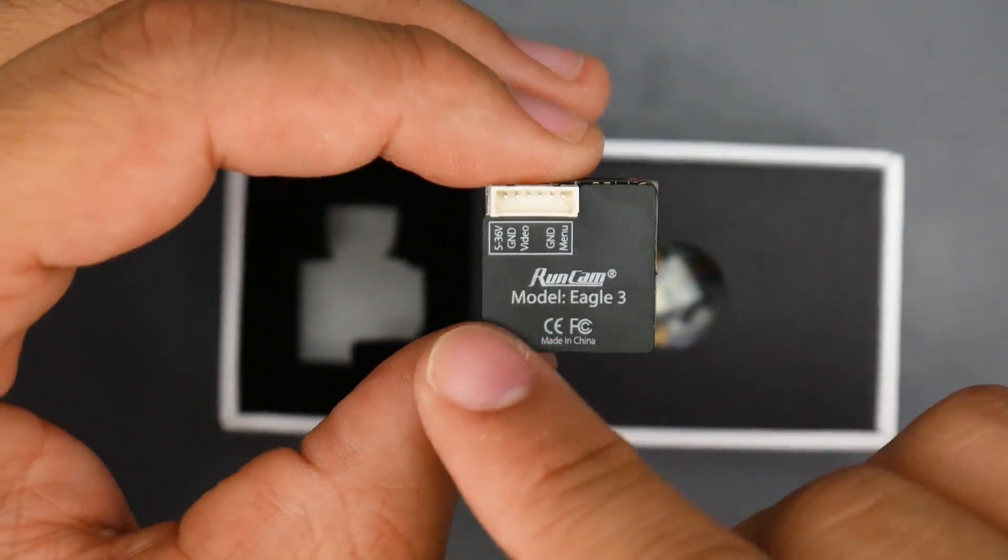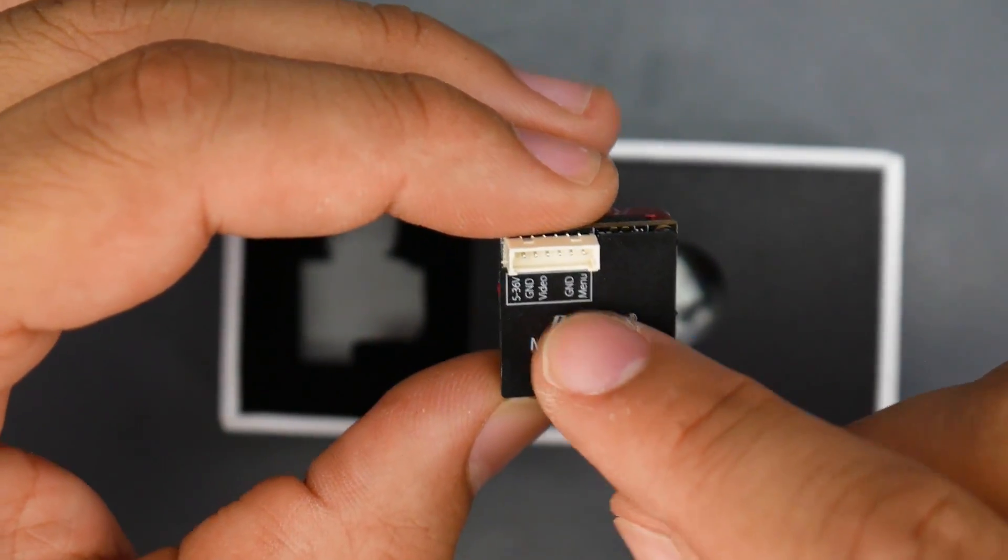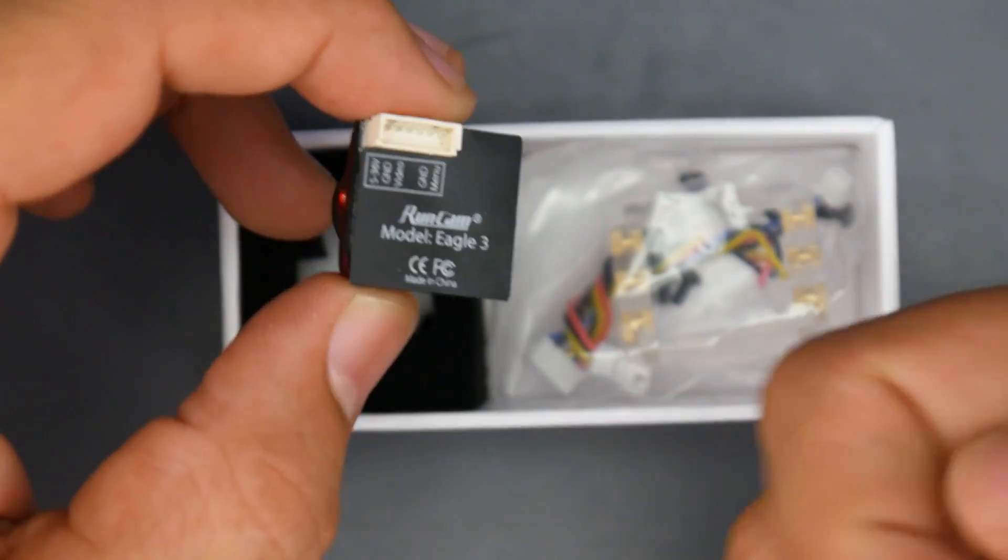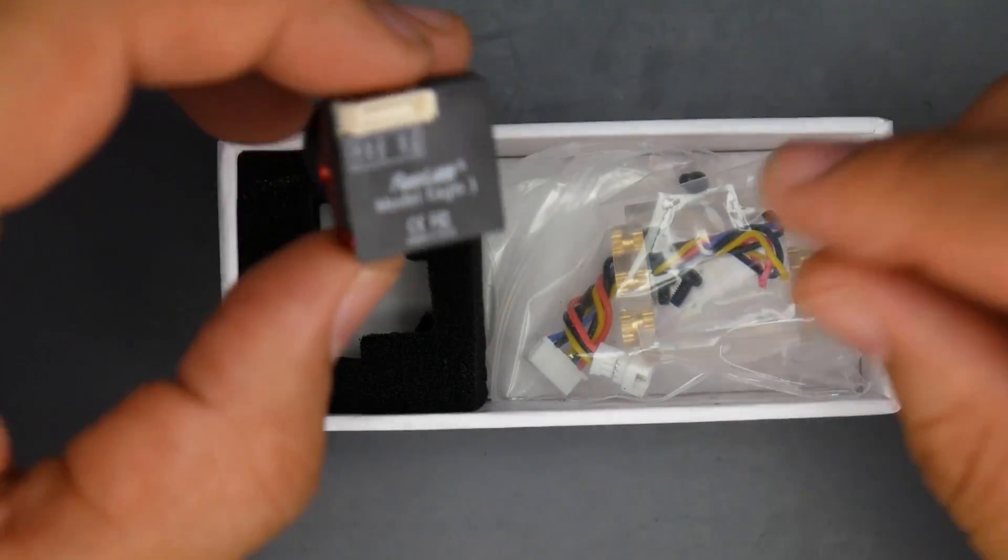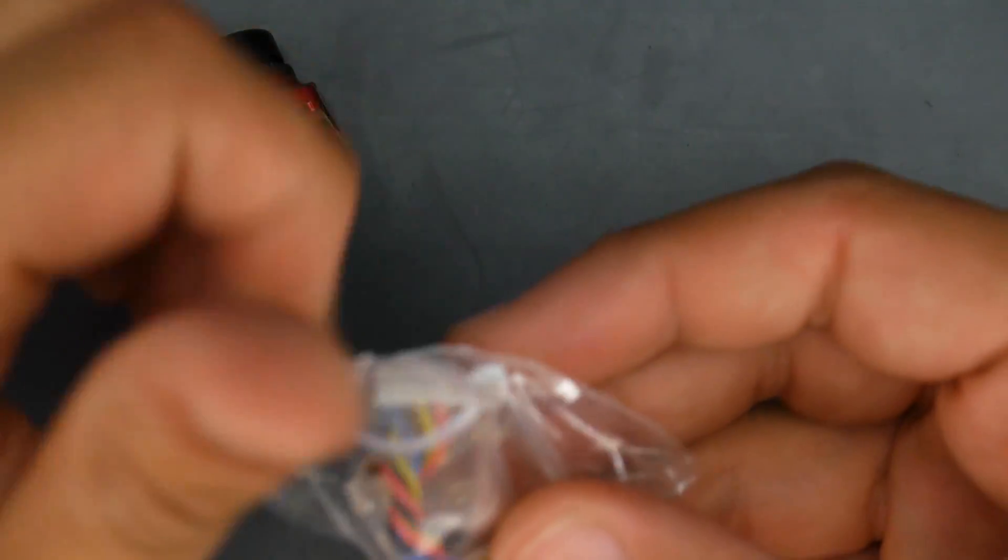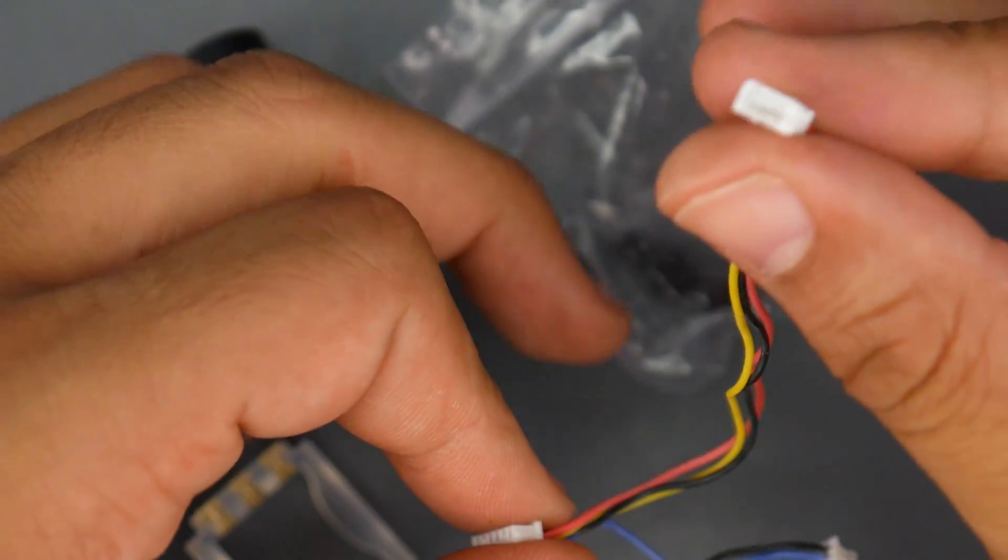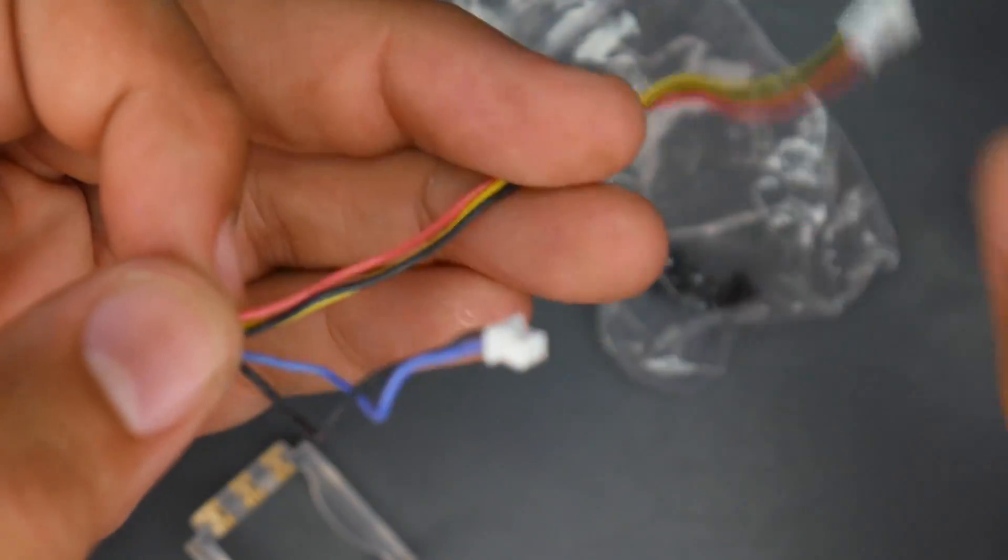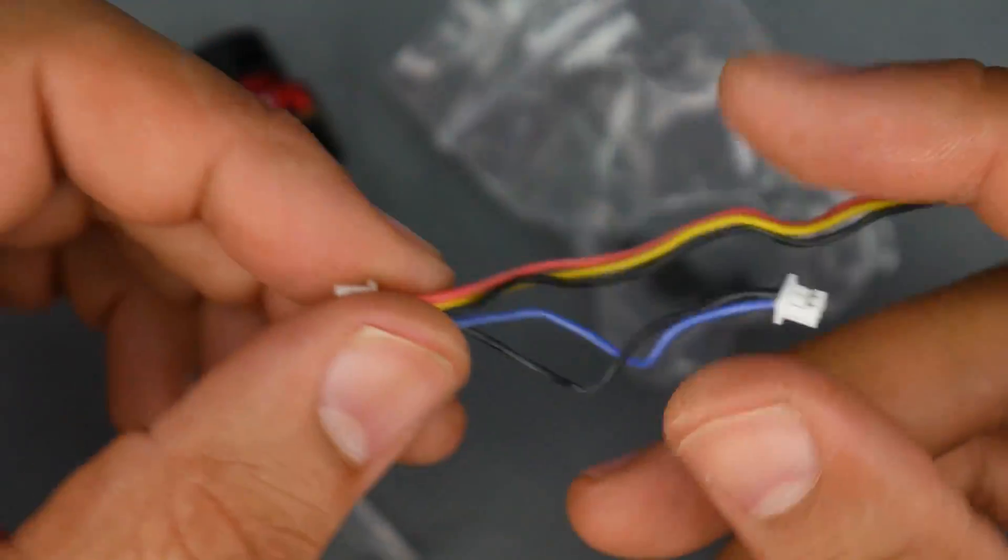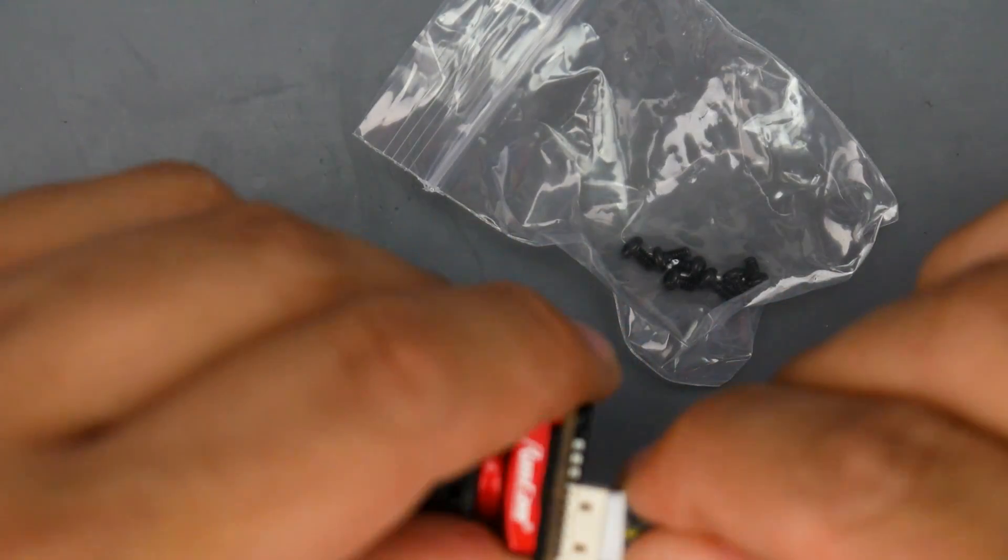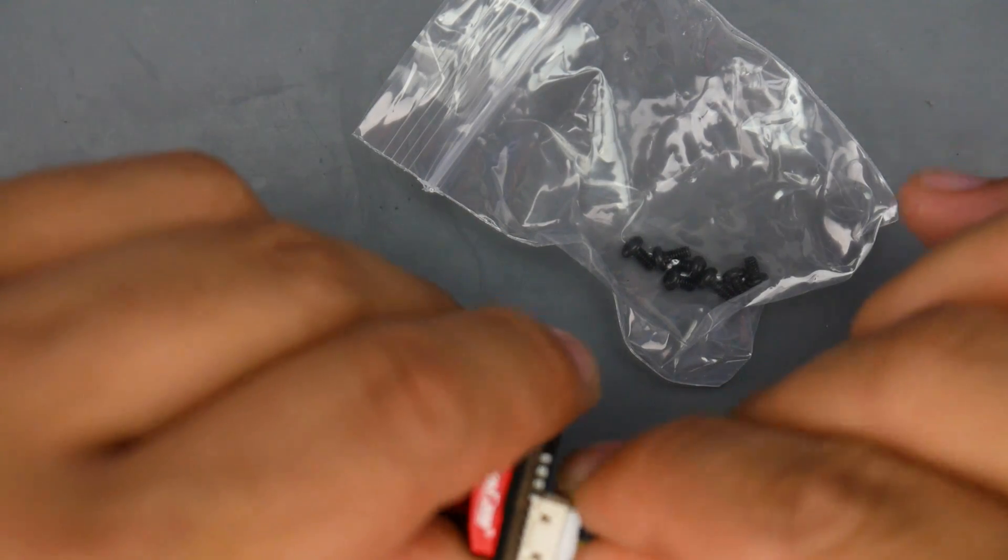Looking at the back, we have 5 to 36 volts input with ground, video, ground, and menu. So it just takes a basic type of OSD remote to change the settings on this thing. For accessories, they provide you with just about the same thing as the RunCam Racer 3: the connector, also a female type connector if you're going to use that. Most people will end up just cutting this off. This is for the on-screen display. You just plug that in, you're good to go. There's no other extra features. It does have an on-screen display on board for all of these.